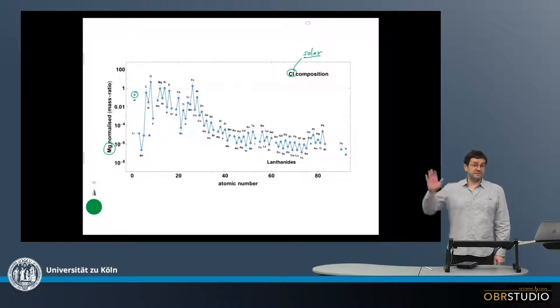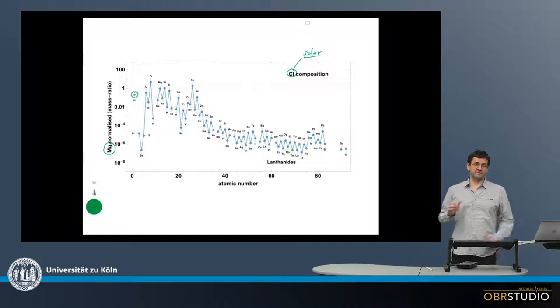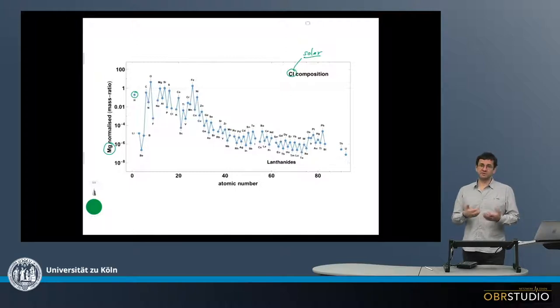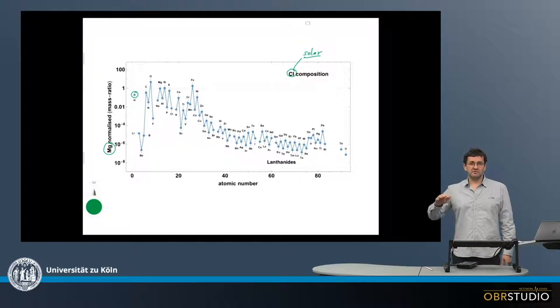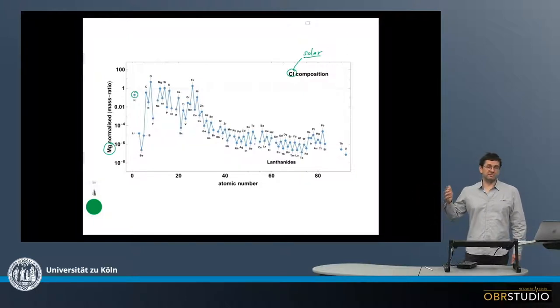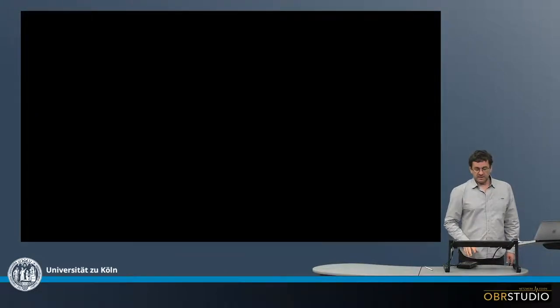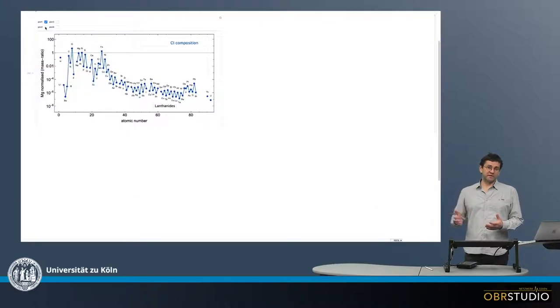A second observation is that there is quite a lot of wiggle. This wiggle is because the elements with even atomic numbers are more easily produced in nucleosynthesis than those with uneven numbers. Still, mostly when you look at bulk chondrite or meteorite element patterns, there is no wiggle.